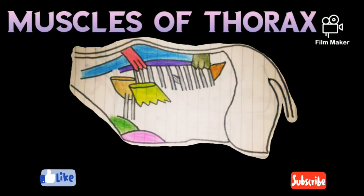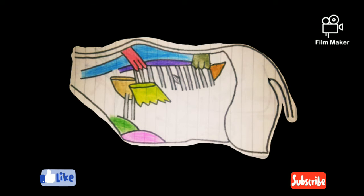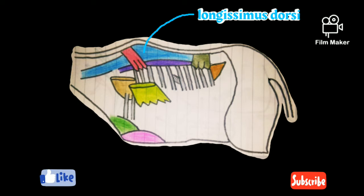First, talking about muscles of thorax. The first muscle is Longissimus dorsi, which is the longest muscle of the body. Next is Longus costae, which is a thin muscle that spreads over the lower ribs.